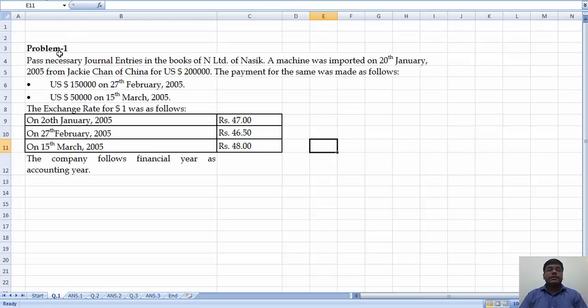Question number one, pass necessary journal entries in the books of N Limited of Nasik. A machine was imported on 28th January 2005 from Jackie Chan of China for US dollar 2 lakhs.